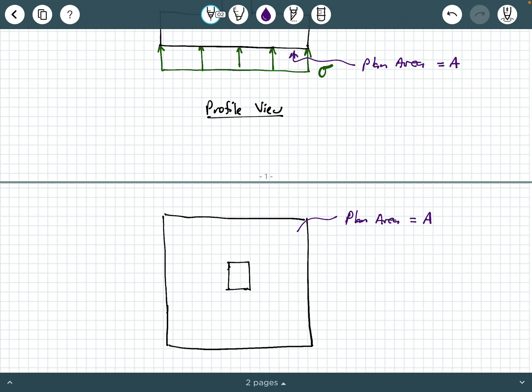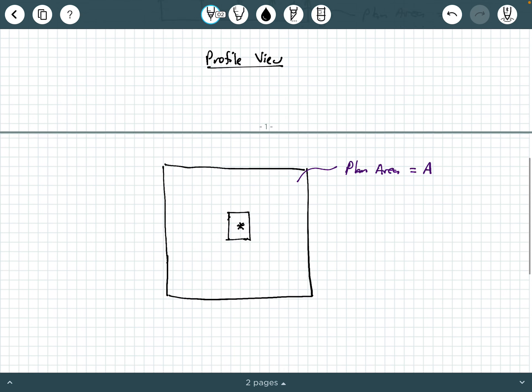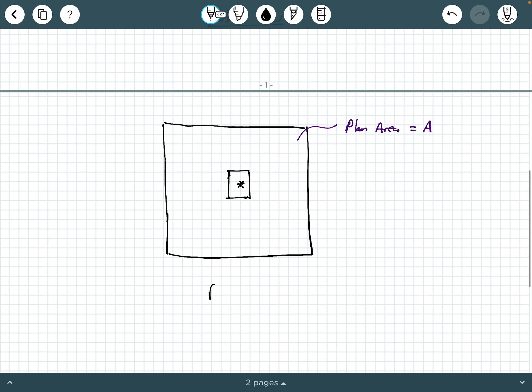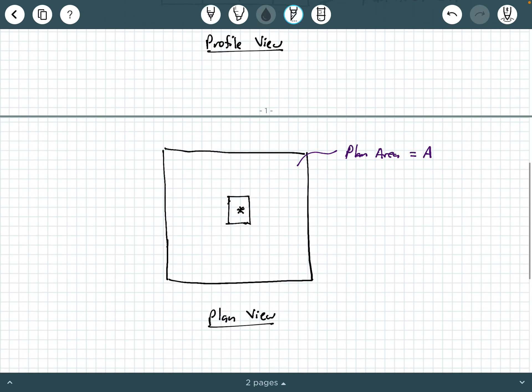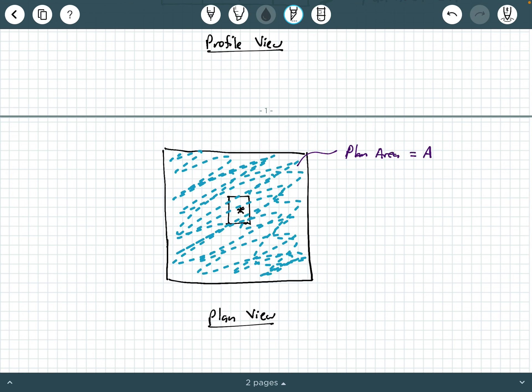So we're going to say that's the plan area. And we can call plan area A. And so that means our column load is coming down into the screen or into your paper when you draw this. So this is our plan view here. And the plan area, it's very important you understand, your plan area for these purposes is this entire shaded area.